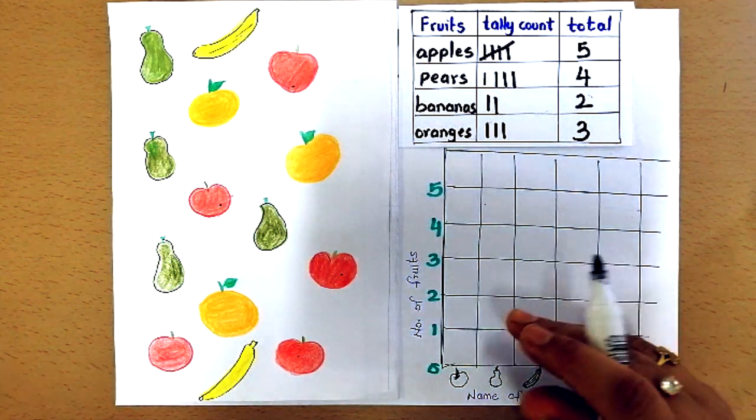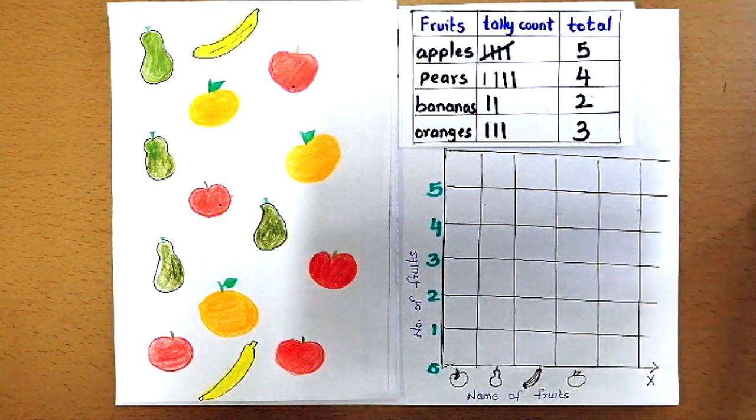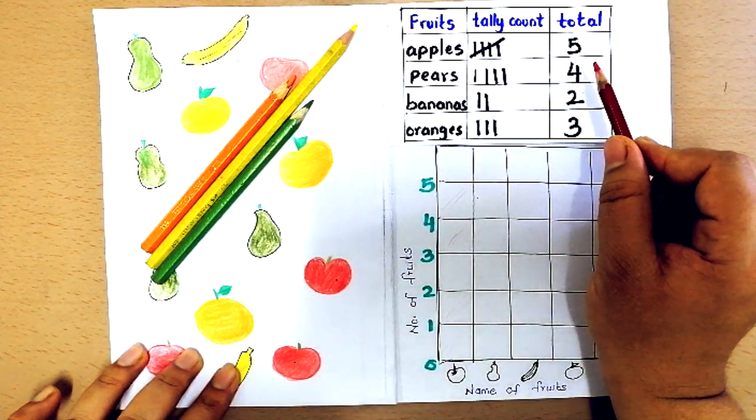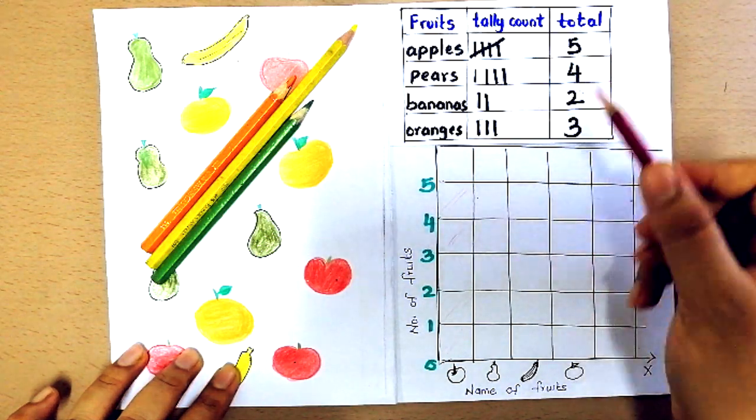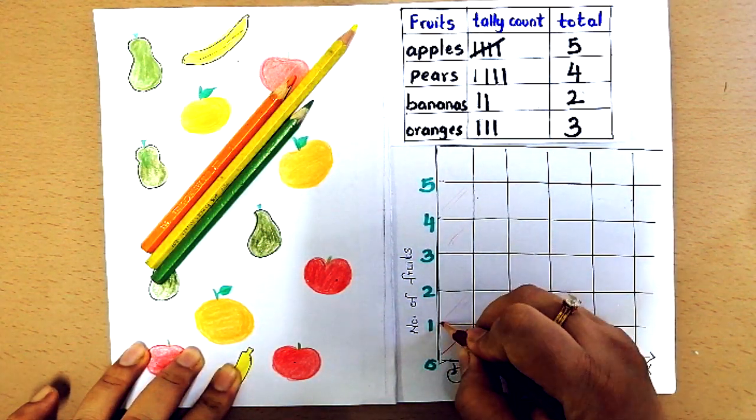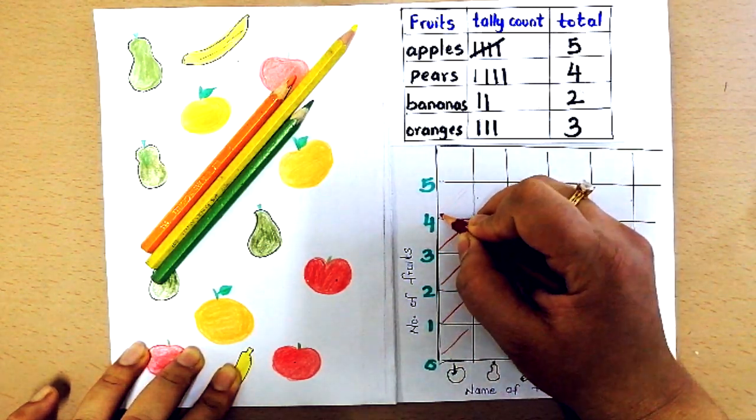The tally chart is ready so let's make the block graph now. There are 5 apples so I'm going to color 5 blocks with red. 1, 2, 3, 4, and 5.